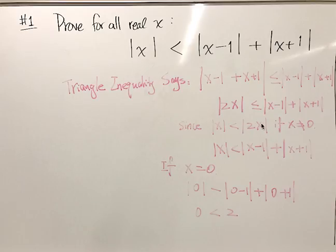When x is not equal to zero, the absolute value of 2x is strictly greater than the absolute value of x for reasons we'll talk about in a minute. But then that means that this side, which is greater than or equal to the absolute value of 2x, is then also greater than the absolute value of x, which is what we wanted to show.